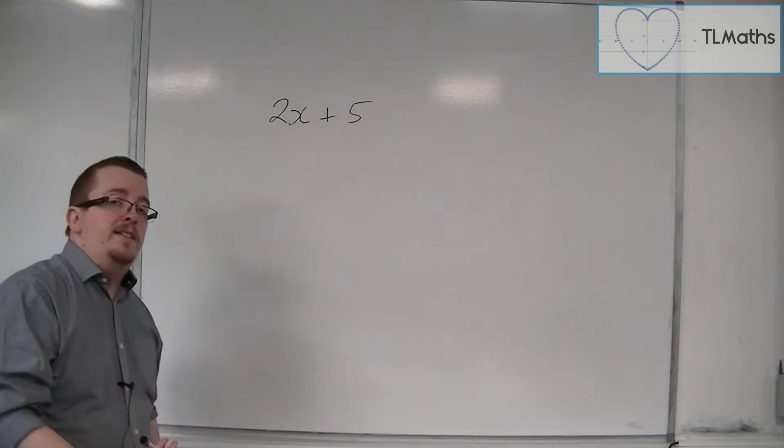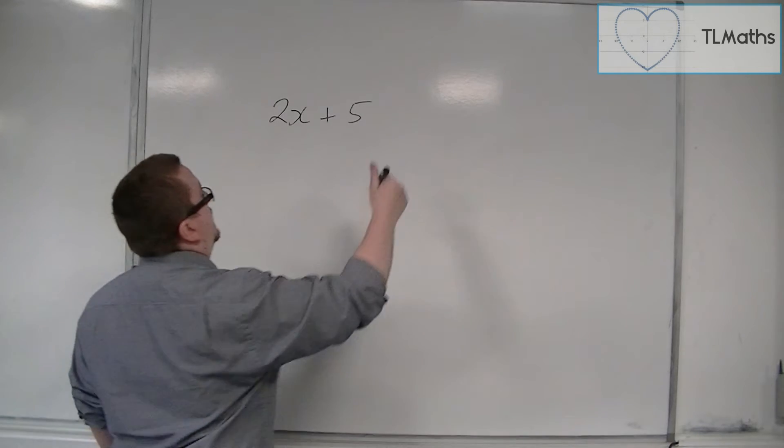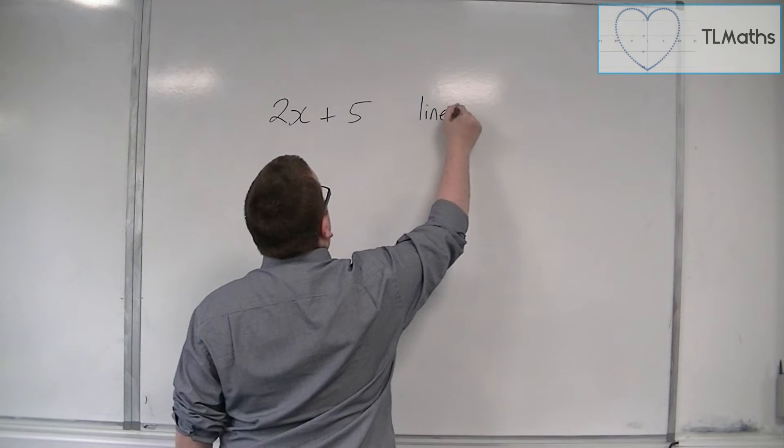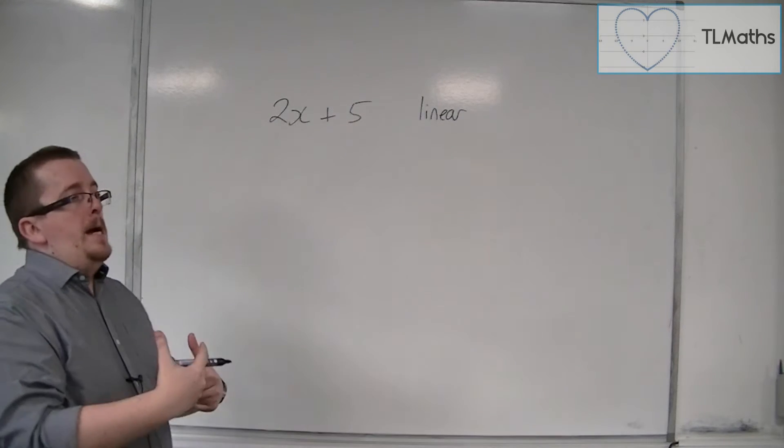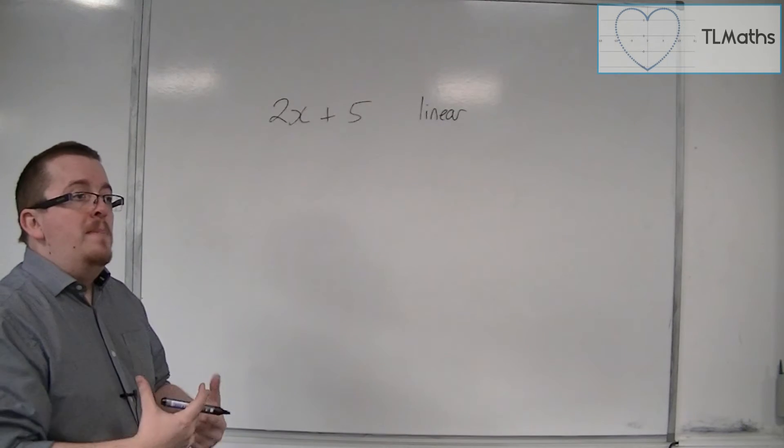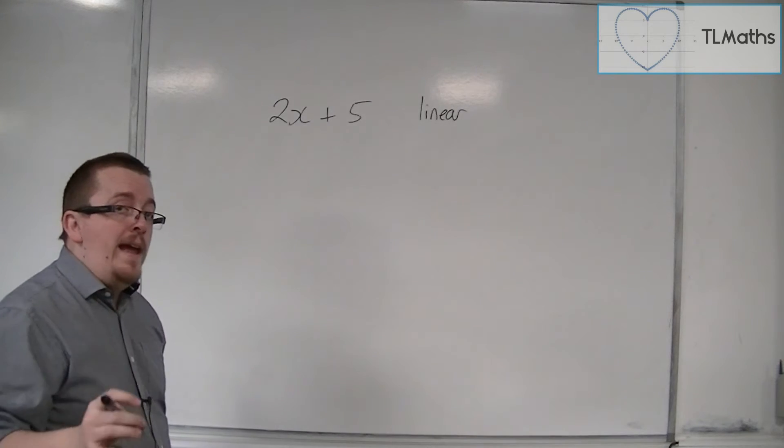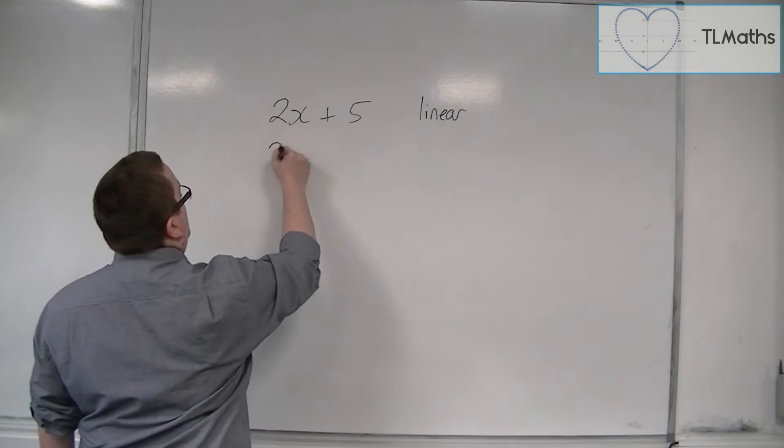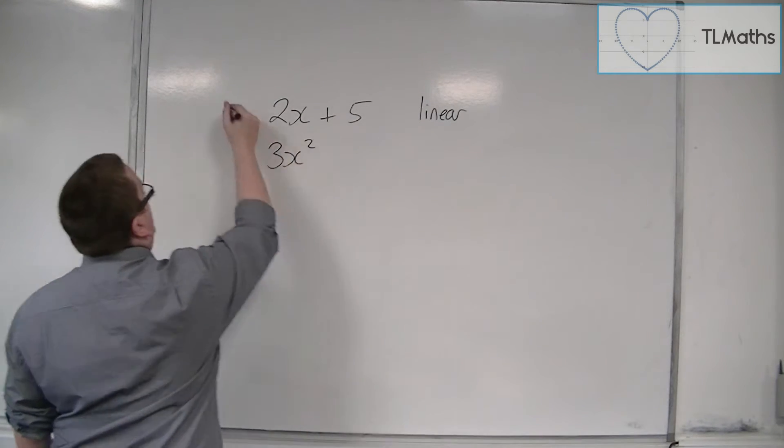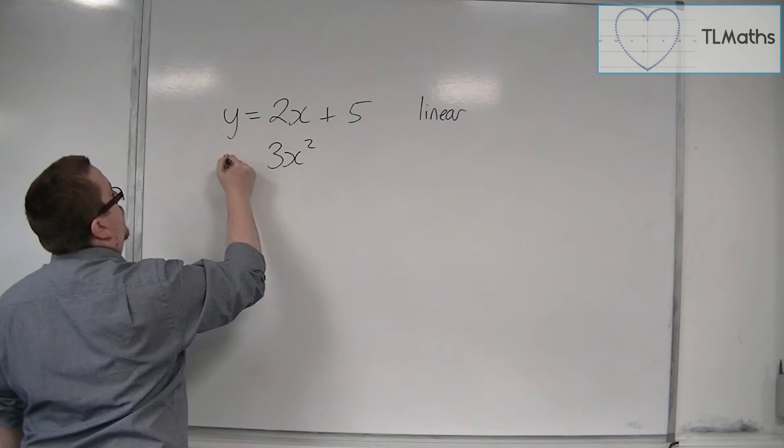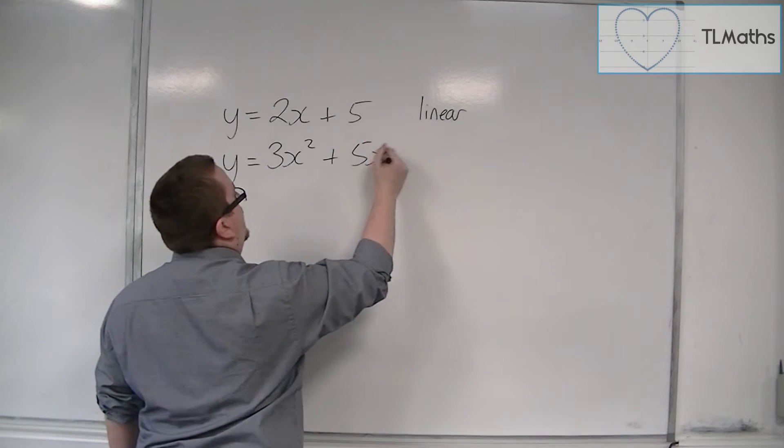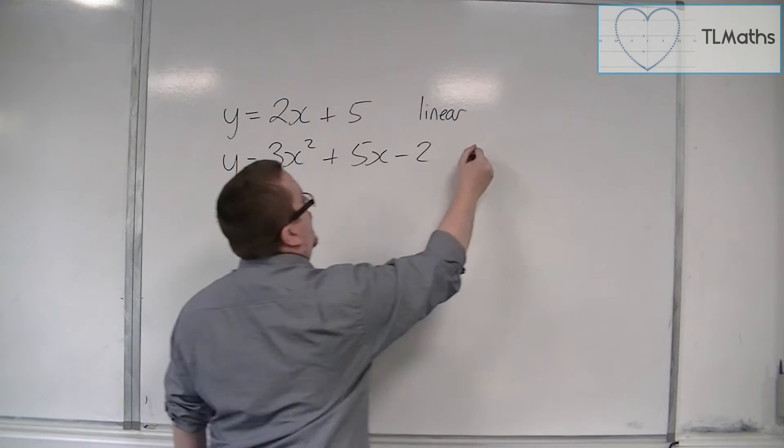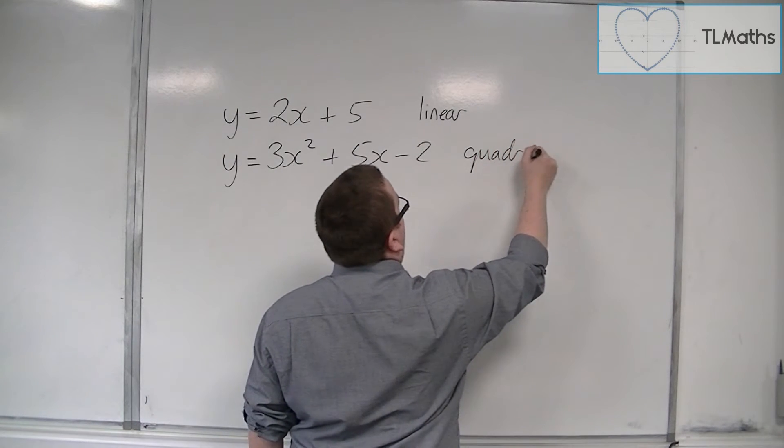And we would refer to that as linear. Now, quadratic, we know that that means that there's going to be an x squared involved. So it might look like y equals 3x squared plus 5x minus 2, for example. And we know that we can identify that as quadratic.